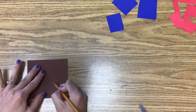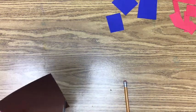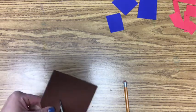With the blue paper, I cut out three rectangles. With the brown paper, I'm going to cut out a circle.